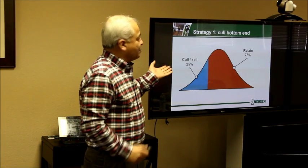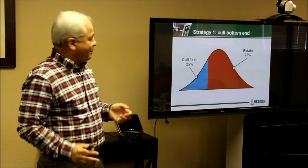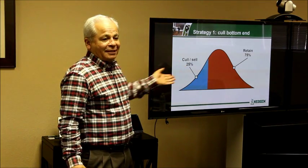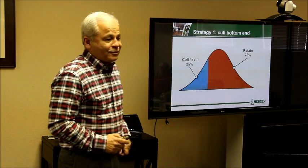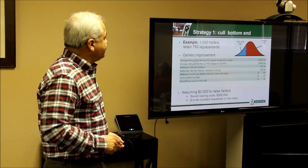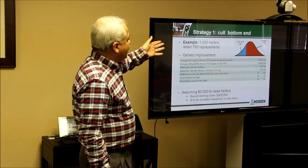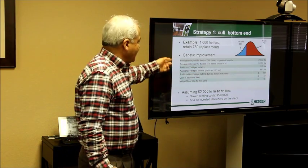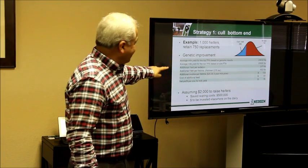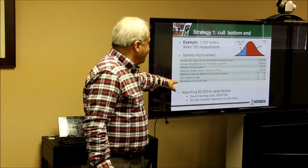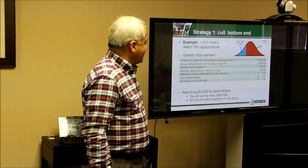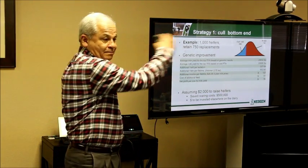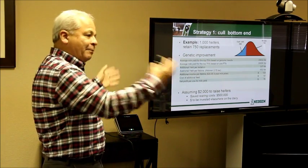This is one of the strategies that you're very familiar with. They retain the top 75% and cull the 25% in order to improve. This is an example of a thousand heifers where you retain, say, 150. When you calculate it with the yield per lifetime, it's about 76 dollars per cow that you're adding when you're keeping 75%.